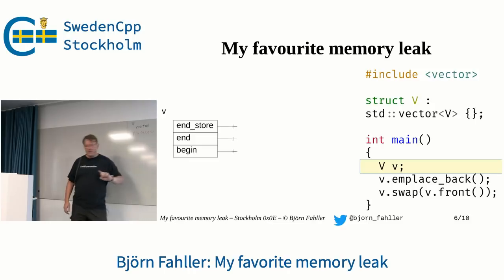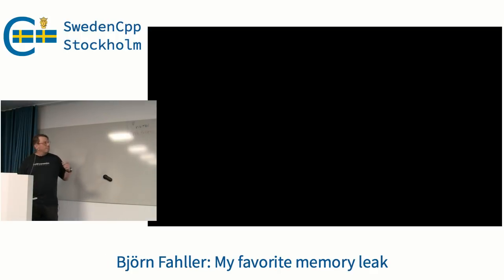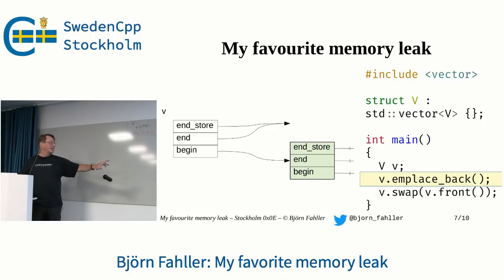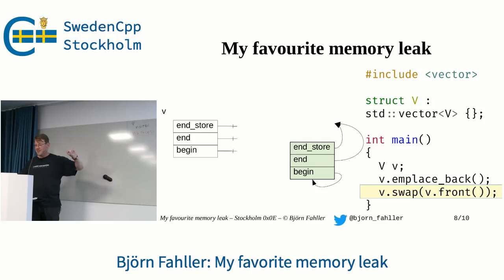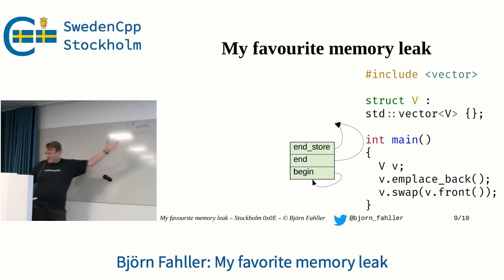And this is the thing, because now we can walk through the program. In main, we create a default-constructed V. So V is there; the crosses are the null pointers, so it doesn't do anything. Now we allocate storage. We create an instance in the vector storage that is a default-constructed V, so it has null pointers. And then we swap them. So V gets the pointers that the element has and vice versa — like so. Now V is an empty vector, and we go out of scope. And we have leaked memory without using any memory allocation ourselves. And there you have it: my favorite memory leak.